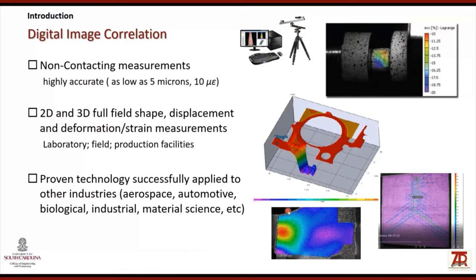Digital image correlation can be applied for 2D and 3D full-field shape, displacement, and strain measurements in the laboratory, in the field, and in production facilities. It's a proven technology that has been successfully applied to the aerospace, automotive, biological, industrial, and material science industries over the years. In the last few years, we've been implementing this in railway infrastructure.